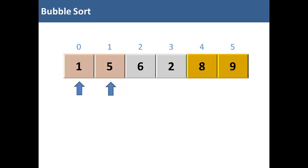Okay, the third iteration. Compare one to five. Is one greater than five? No. Is five greater than six? No. Is six greater than two? Yes, it is. So we will swap them. That completes our third iteration.